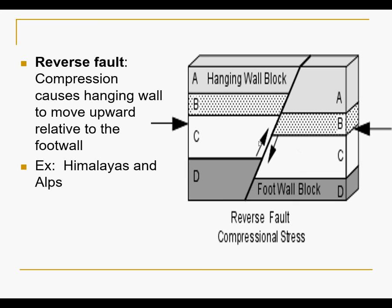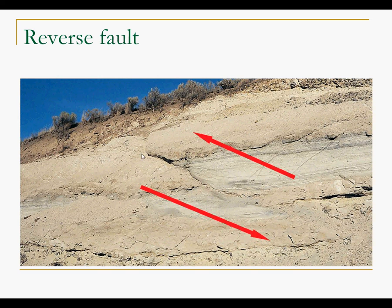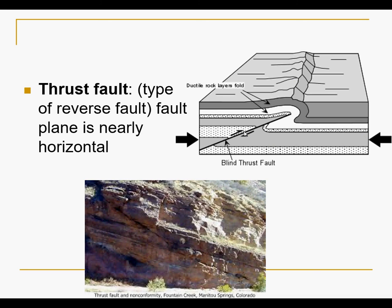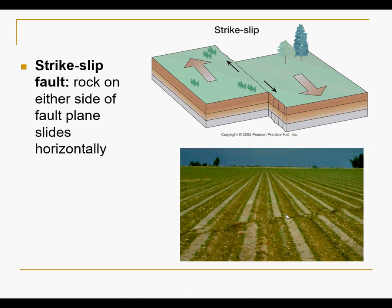We see reverse faults happening in the Himalayas because of the huge vertical uplift. Here is the fault plane, here is the foot wall, here is the hanging wall being pushed up. A blind thrust fault is where the fault is so shallow it doesn't extend far out of its plane — it's a nearly horizontal, really flat fault. Strike-slip faults slide horizontally in parallel — you can see where crops were planted in rows, and then the fault moved the ground over.